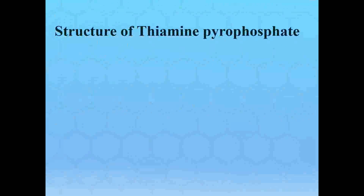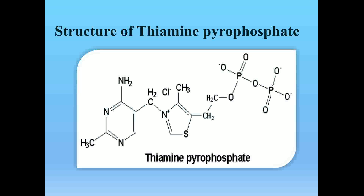Regarding the structure of thiamine pyrophosphate: it is composed of the thiamine structure plus a pyrophosphate group attached to the hydroxyethyl alcohol function — the hydroxyl group attached to the thiazol ring. The only structural difference from thiamine is that the hydrogen atom of the hydroxyl group is replaced by two consecutive phosphate groups attached to the oxygen atom.